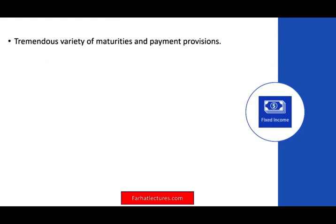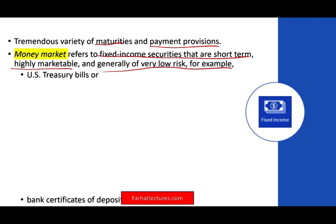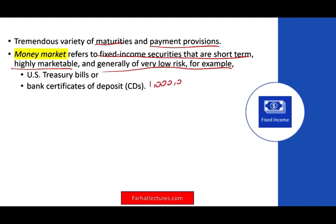We might have many different types of debt investments — they come in tremendous flavors and vary in maturities and payment provisions. Starting with money market: money market refers to fixed income securities that are short-term, highly marketable, and generally very low risk. We're talking about U.S. treasury bills or bank certificates of deposit — not your regular bank certificate, but millions of dollars in negotiable bank certificates that can be sold. Simply put, you put your money in the bank and it gets invested in fixed income securities like U.S. treasury bills — short term, highly marketable, and low risk.